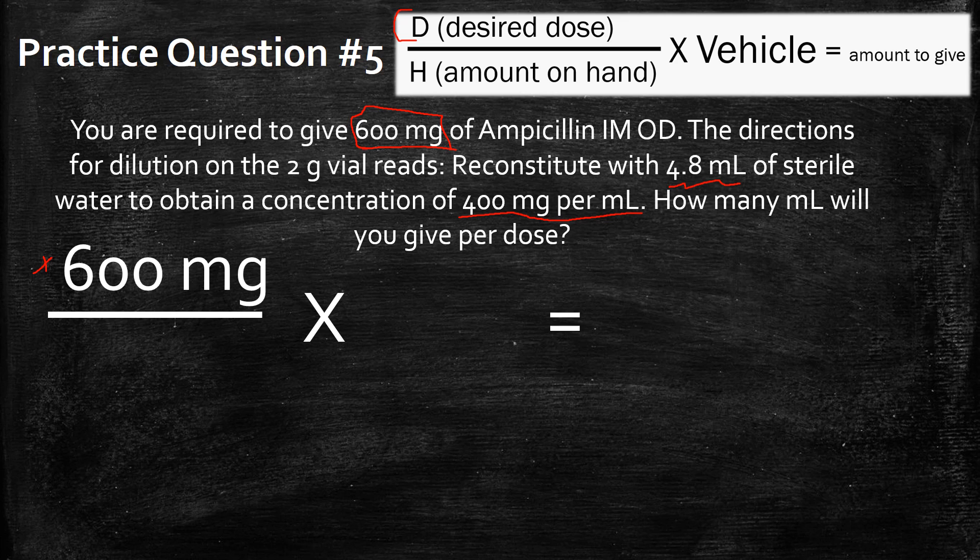So basically, you're going to ignore everything from here. That doesn't matter. It doesn't matter how you reconstitute it. All that matters is the concentration you're going to have at the end because that's what you're going to base your final calculation on. So the amount ultimately you're going to have on hand is 400 milligrams per milliliter.